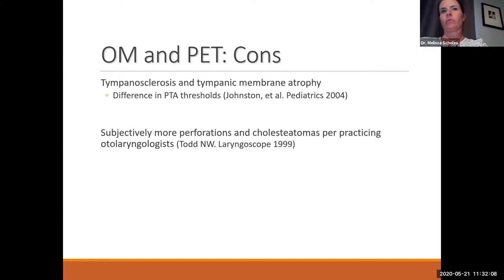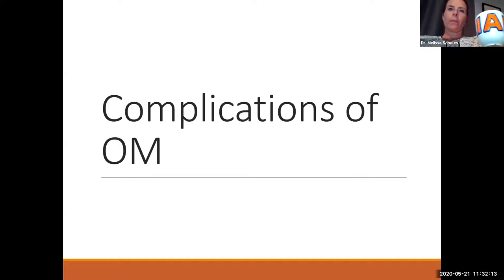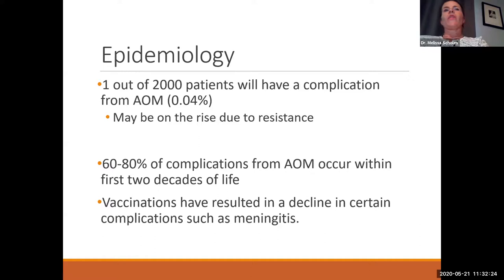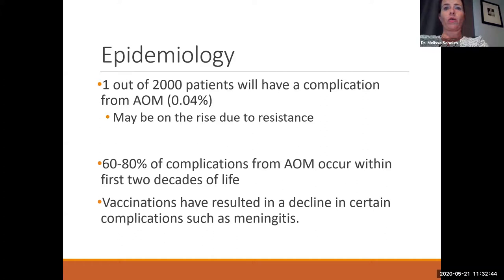Switching to long-term complications: epidemiologically, 1 out of 2,000 patients — about 0.4% — will have a complication from acute otitis media. However, due to rising antibiotic resistance, these complications may be on the rise. Most complications occur under age 20 — about 60 to 80%. Vaccinations have resulted in a decline in certain complications such as meningitis.